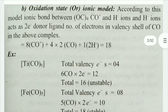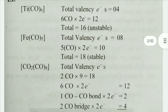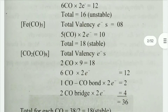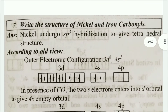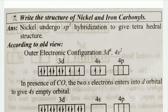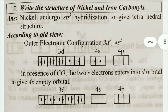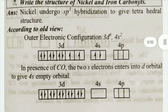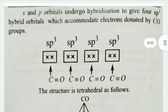Note down the answer. If you have parts A, B, and H, you can write your answer in the exam. Also, write the structure of nickel and iron carbonyls. This is a short question — very easy. The structure involves sp3 hybridization, so it is easy. Here is the answer.